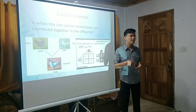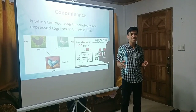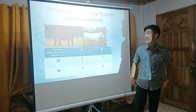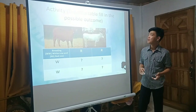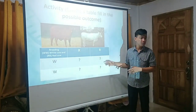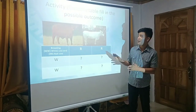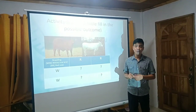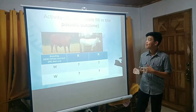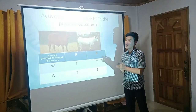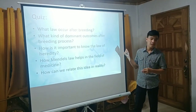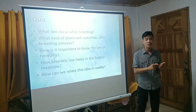Class, do you understand anything we discussed for today? Anyone? Okay, good. If there is no further question, let's proceed to the activity. Our activity: create a table and fill in the possible outcome of the illustration below. Do you have a red cow and a white cow? Answer it on one whole sheet of paper. I'll give you five minutes. Anyone done? Pass the paper. If you really understand our discussion, answer the following questions. I'll give you ten minutes and answer it on one whole sheet of paper. Time's up. Pass the paper.